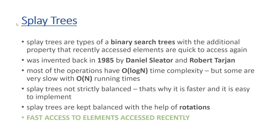Splay trees were invented back in 1985. Most of the operations have O(log n) logarithmic running time complexity, because it is a binary search tree. But some operations may become very slow. Splay trees may become imbalanced, and because of the imbalance feature, it may happen that the running time complexity is O(n) linear, which means we may end up with a linked list instead of a balanced binary search tree.